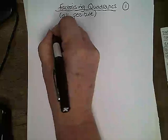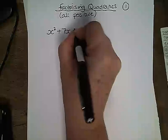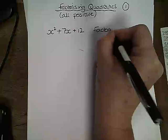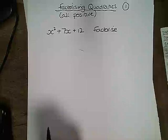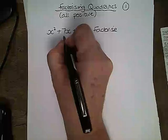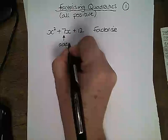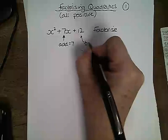So for example, if we have x squared plus 7x plus 12 and we are asked to factorise that, that means we want to put it back into the original double brackets from which it was expanded.